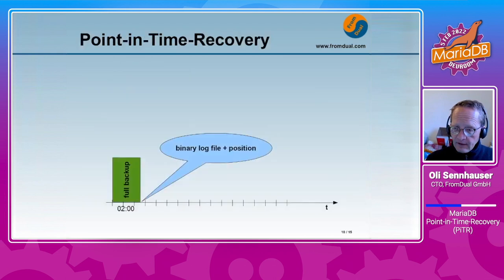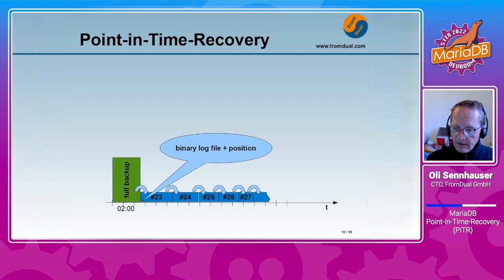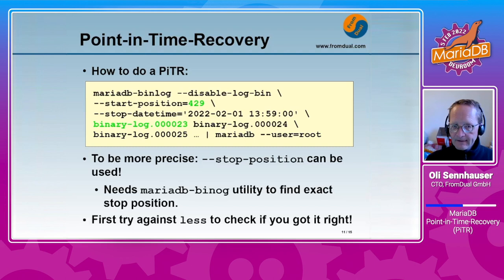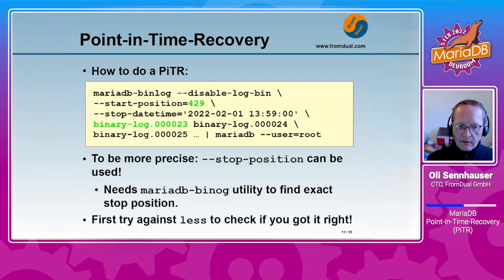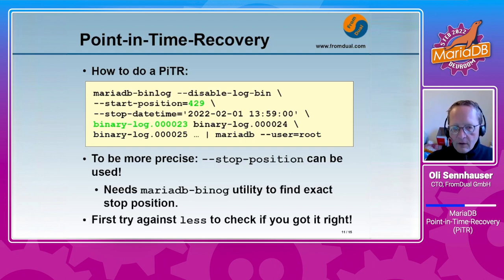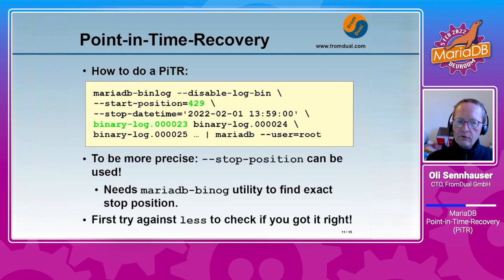With your point-in-time recovery, you've done the full restore and you know the file and position. Now you want to play back binary logs 23, 24, 25, 26, etc., up to the point where the logical error occurred. To do this technically you need the utility MariaDB binlog. You provide the --start-position (the position in the first binary log from your backup), then a --stop-datetime (the date and time where you want to stop), and then list all binary logs in the right order starting from the one indicated in the backup.